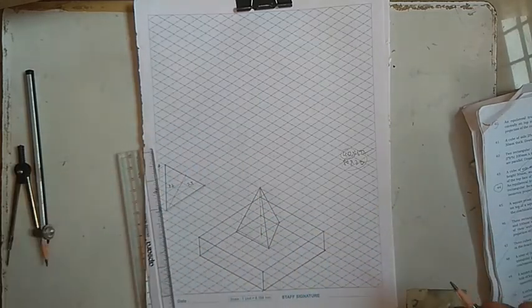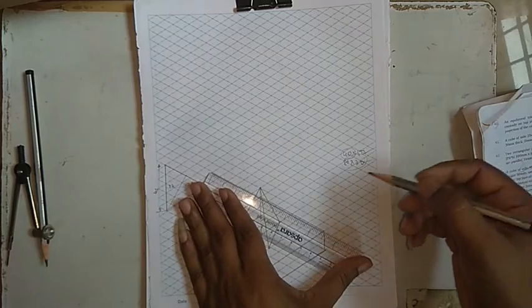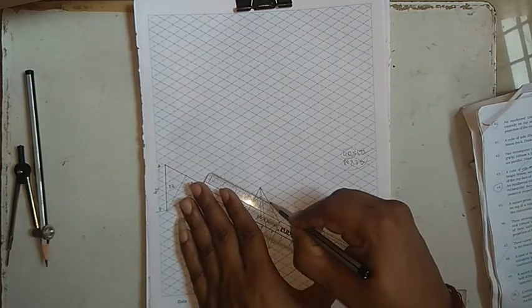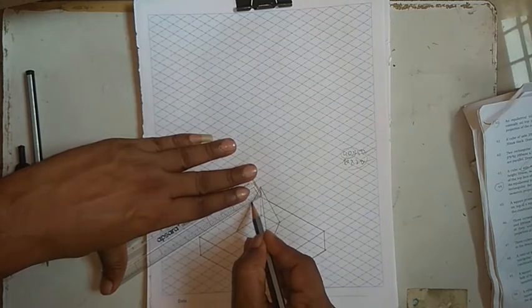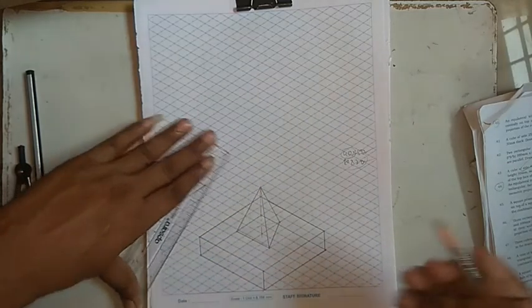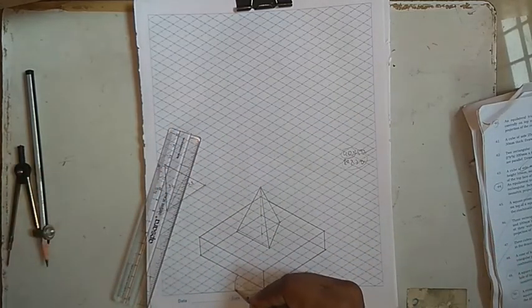Now this line will be visible till the intersection of the triangle. Even this line will be visible till the intersection of the triangle. Now just try it, this is 30 and this is 30.